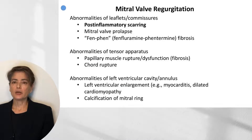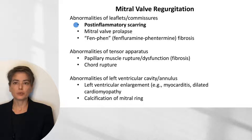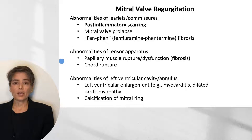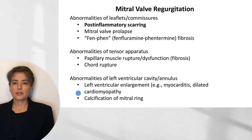As we consider insufficiency, mitral valve regurgitation can be due to abnormalities of leaflets and commissures—including post-inflammatory scarring, mitral valve prolapse, and fen-phen fibrosis. We can also get abnormalities of the tensor apparatus, such as papillary muscle rupture or dysfunction following myocardial infarction, as well as cord rupture. Additionally, abnormalities of the left ventricular cavity or annulus can occur, such as secondary to left ventricular enlargement due to myocarditis or dilated cardiomyopathy, or calcification of the mitral ring.